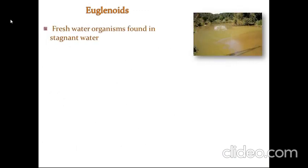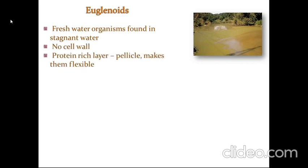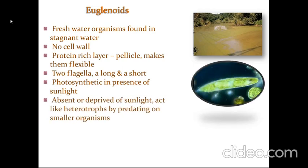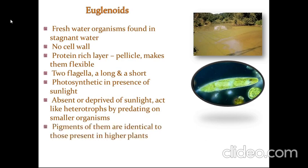The next one is euglenoids. They are freshwater organisms found mainly in stagnant water. They don't have any cell wall but have a protein-rich layer called pellicle that makes them flexible. They have two flagella — a long one and a short one. They are photosynthetic in the presence of sunlight. In the absence of bright sunlight, they act like heterotrophs by predating on smaller organisms. The pigments of euglenoids are identical to those present in higher plants.